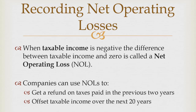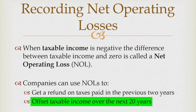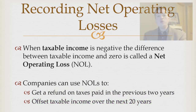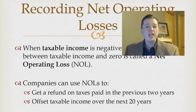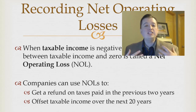The government gives us a couple of opportunities to use our net operating loss. We can either get a refund on the taxes we paid in the last two years, or we can offset taxable income for the next 20 years. As a company, we really have to stop and think about what we want to do with this net operating loss — are we going to carry it back or carry it forward? And the decision should be based on what's going to give us the most cash back, or when we need the cash.